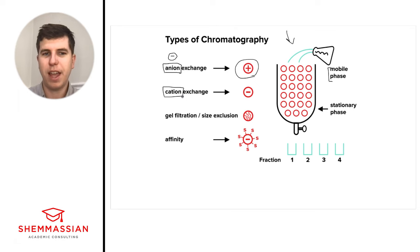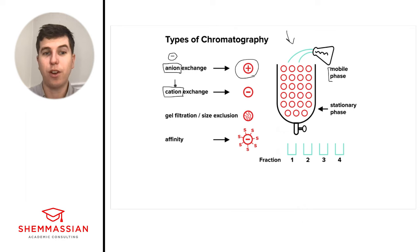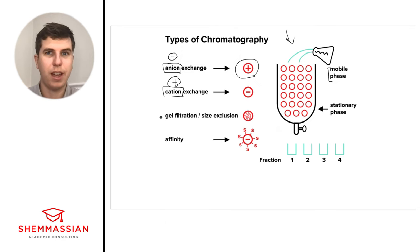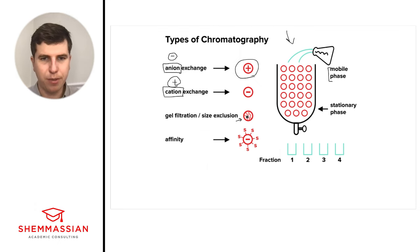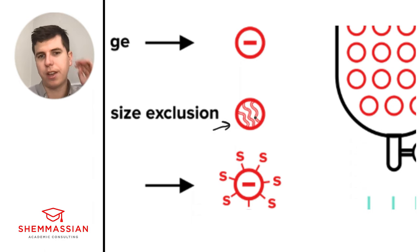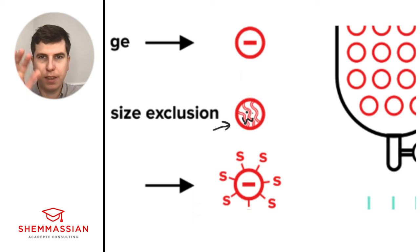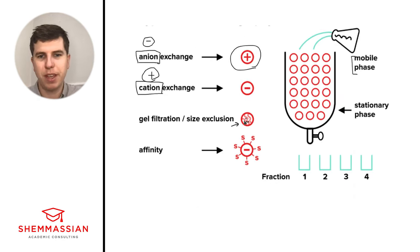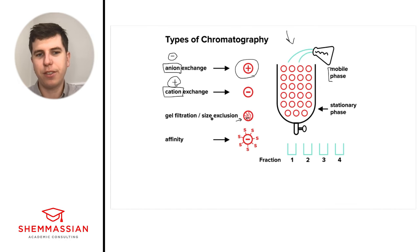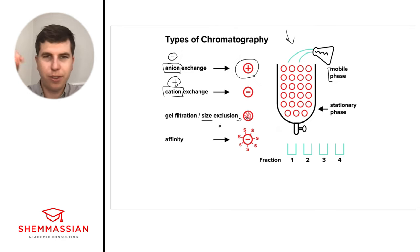Cation exchange is the opposite: a negatively charged stationary phase catches positively charged cations, which are then washed out. Gel filtration and size exclusion chromatography separate by size — smaller things pass through pores in the column while larger compounds get stuck. This lets us figure out generally how big something is, for example in kilodaltons.